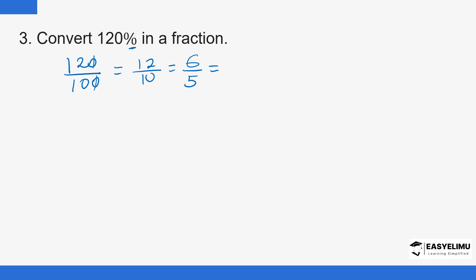6 over 5 is an improper fraction, so we convert it back to a mixed number. Break down the numerator into components of the denominator: 6 = 5 + 1. Divide each part by 5: 5 divided by 5 is 1, and 1 over 5 remains. So 6 over 5 as a mixed number is 1 and one-fifth. If you need a reminder on converting improper fractions to mixed numbers, check our previous videos — we've done videos on that.